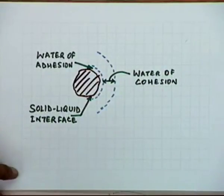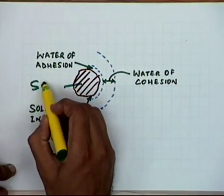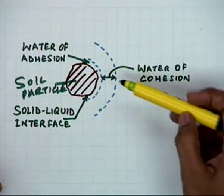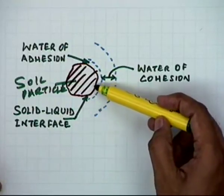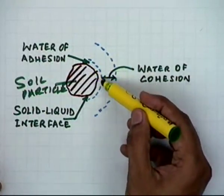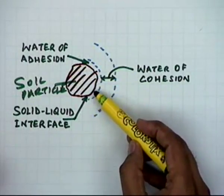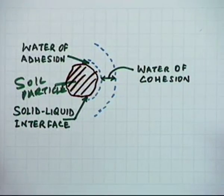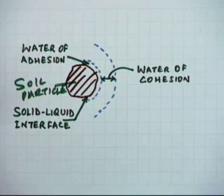Let's take a look at a soil particle. This soil particle can have a layer of moisture which is very closely attached to it — this first layer of moisture very closely stuck to the soil particle. This layer is called the layer of adhesion, which is the moisture clung to the soil particles by adhesive forces.